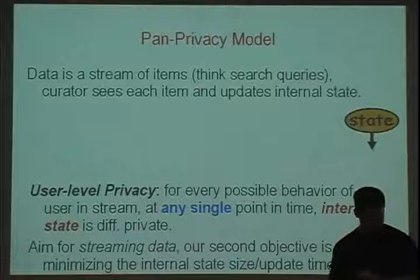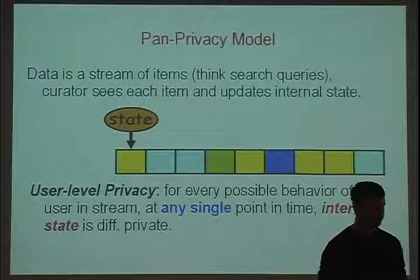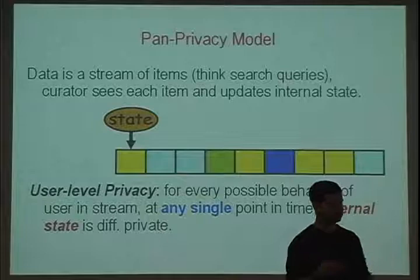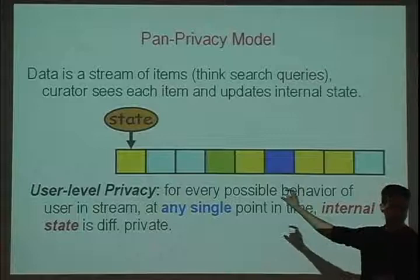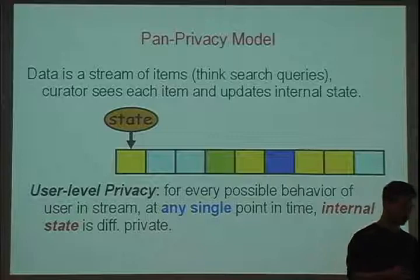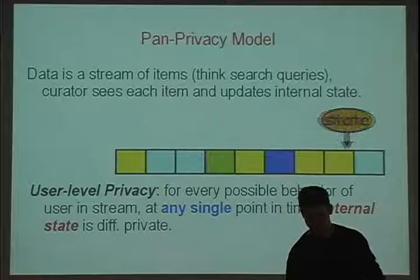There's a distinction between user-level and event-level privacy, which has to do with whether you're trying to protect the privacy of an individual data item or all items pertaining to a single user. We're talking about protecting all items pertaining to a single user — the guarantee is that whether or not you made all of your queries, however many you made, your privacy is preserved. A second objective, privacy aside, is also to have very small internal state and very quick update time — the internal state should be polylogarithmic in the data stream size.